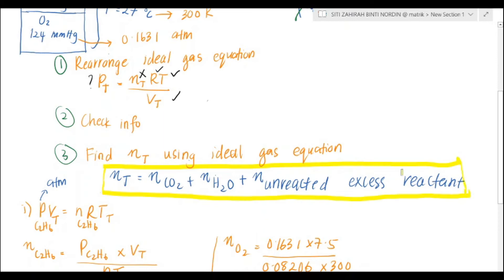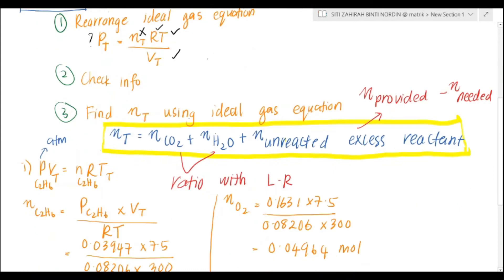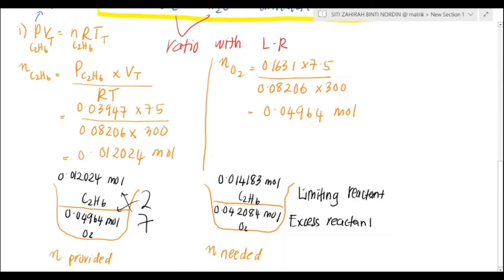This question is a bit hard, I know. I hope it won't appear in your PSPM this year. We don't have all mols, but we can find the mol of product, which is CO2 and H2O, by using ratio with limiting reactant. For the mol of unreacted excess, you just need to minus the mol provided minus the mol needed of your excess reactant. We found out that the limiting reactant is C2H6. Put a star on it.